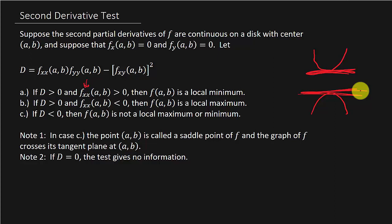With a saddle point, at that point, if you move out along the x-axis the function might be increasing — like concave up — but if you move out along the y-axis it could be decreasing. That's what happens with a saddle point. And if D equals zero, the test gives no information.